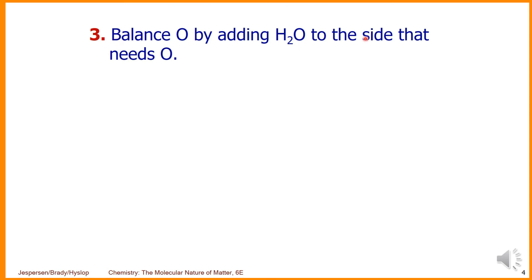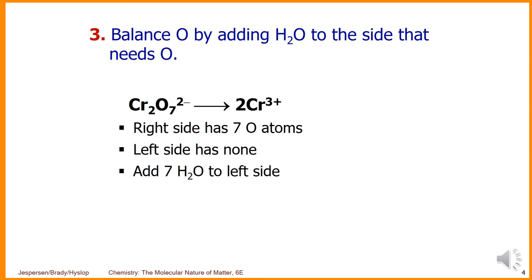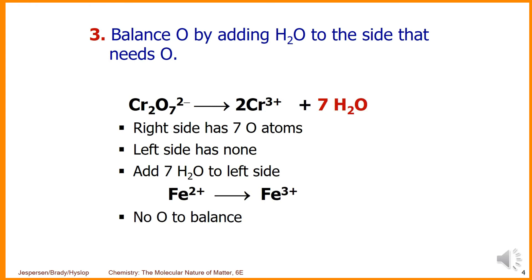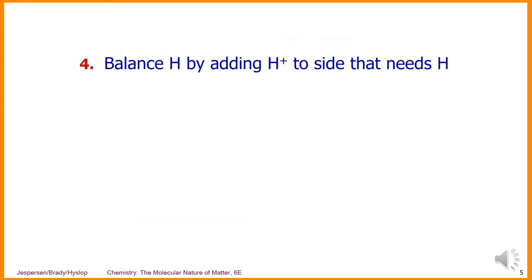Step three: balance oxygen by adding H₂O to the side that needs oxygen. For the Cr₂O₇²⁻ half-reaction, the right side has no oxygen, so we add seven H₂O to the right side. For the Fe half-reaction, there is no oxygen to balance.